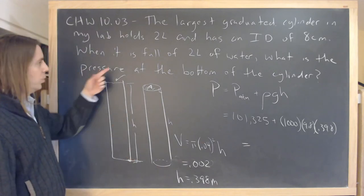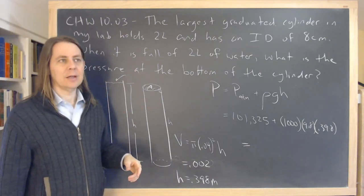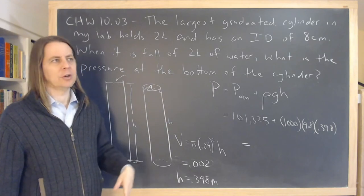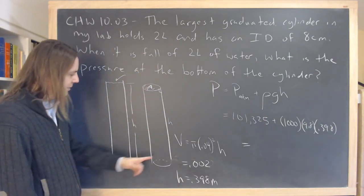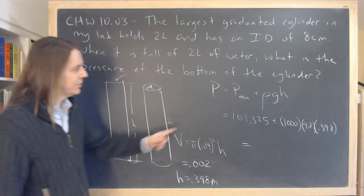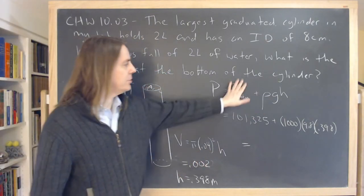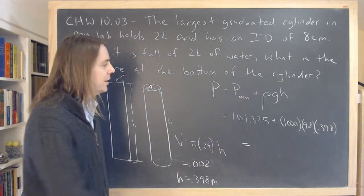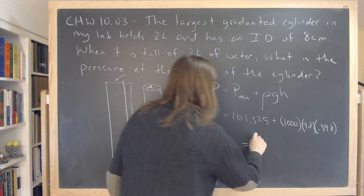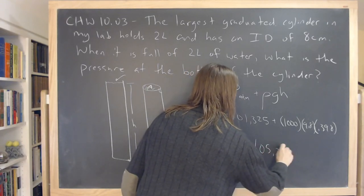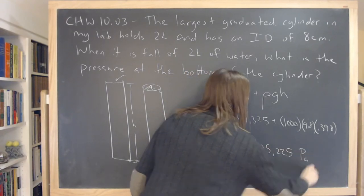It said, what is the pressure at the bottom of the cylinder? It didn't say disregard air pressure. It didn't say just due to the water. It just said, what is the pressure? That is the absolute pressure. So you add this 4,000 to that and it's 105,225 pascals.